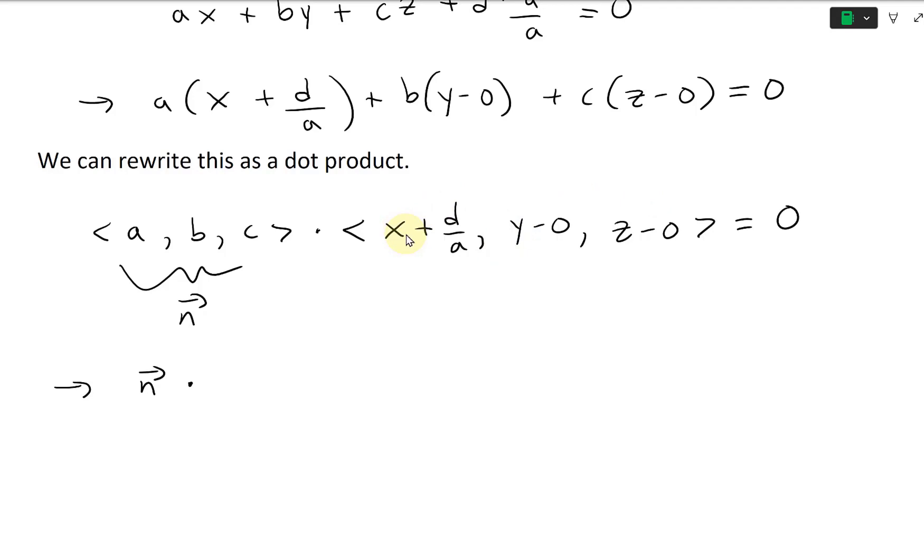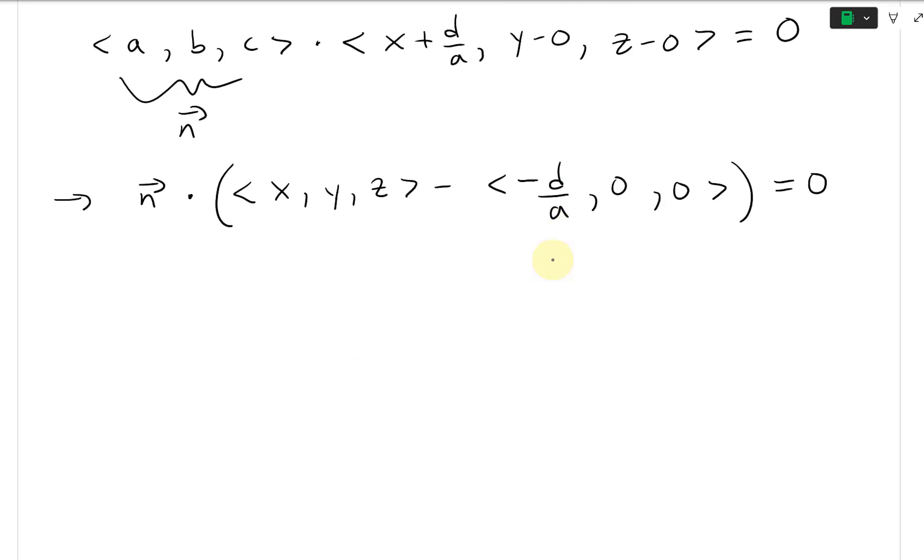What we get is n vector dot... this is the same as writing <x, y, z> plus the point. Actually, instead of plus we'll use negative, so we're subtracting: <x, y, z> minus <-d/a, 0, 0> equals zero. This general position vector is r, and this point is r₀, the point on the plane.